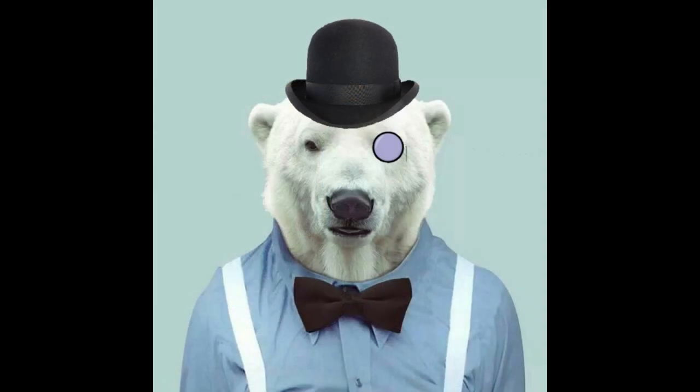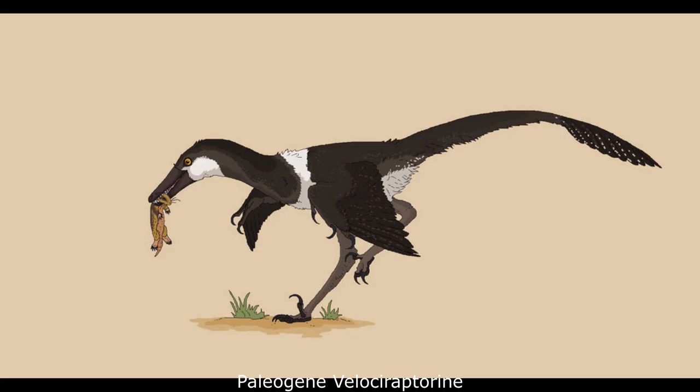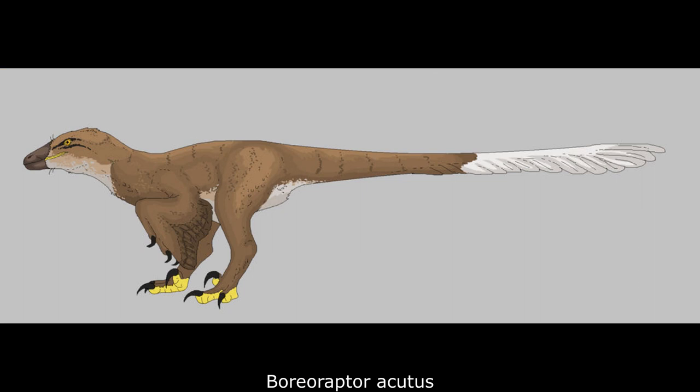Elsewhere in China, many other noteworthy Paleocene dinosaurs have been uncovered from the country's numerous fossil-bearing rocks. The common dromaeosaur Boreoraptor has been found in the late Paleocene Qijang Basin sites, alongside a smaller velociraptorinae, Zhang Qialestes minor. The presence of Boreoraptor in Asia, North America, and Europe indicates just how successful this genus really was, and helped pave the way for a radiation of large predatory dromaeosaurs later in the Eocene.